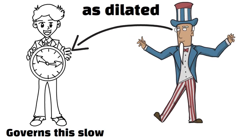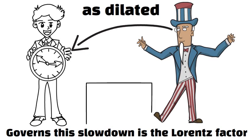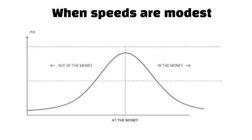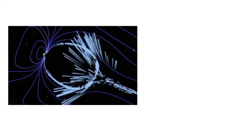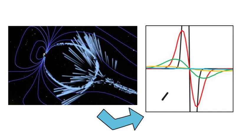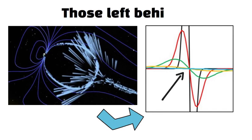The factor that governs this slowdown is the Lorentz factor, often written as gamma. When speeds are modest, gamma is close to 1, so there's almost no noticeable effect. But as you push near light speed, gamma can soar into double digits, meaning a short amount of onboard time can correspond to decades passing for those left behind.